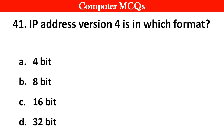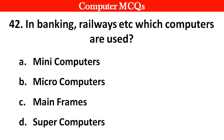Next question: IP address version 4 is in which format? Options A. 4 bit, B. 8 bit, C. 16 bit, D. 32 bit. Right answer is option D: 32 bit.